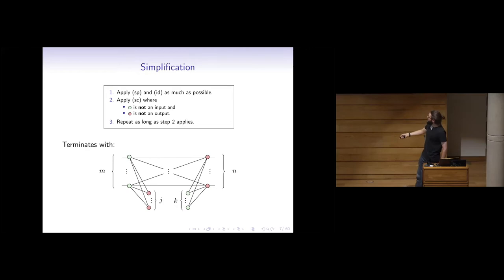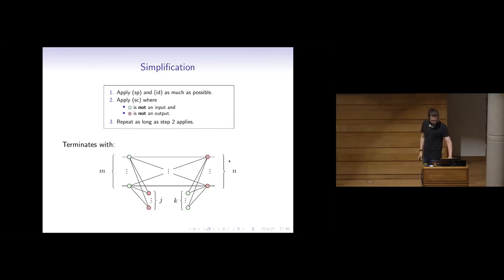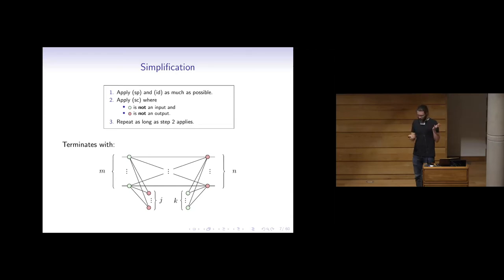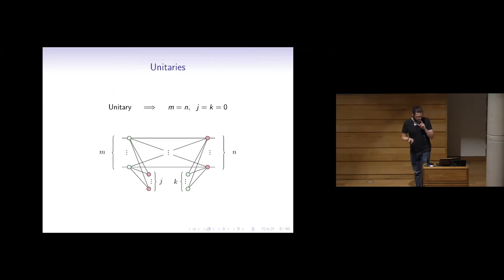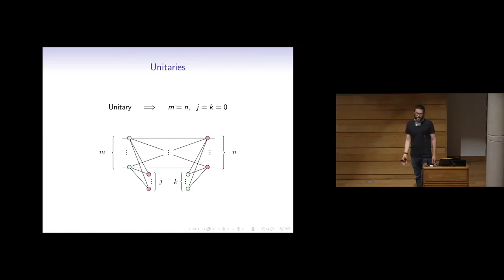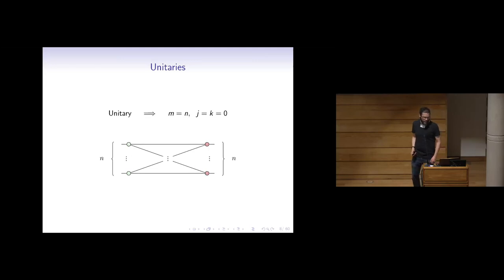It terminates with something that looks like this: some green dots which are on an input, some red dots which are on an output, and some isolated red dots connected just to the inputs, and some isolated green dots connected just to the outputs. That's the general form the procedure terminates at. If the linear map was actually unitary, these extra isolated pieces are both zero — they go away — and I get a very nice form: just some green dots connected by wires to some red dots.